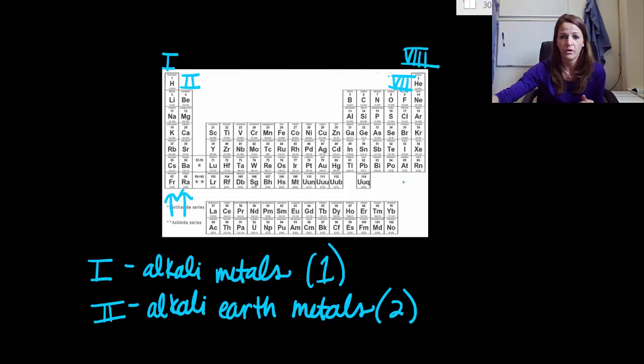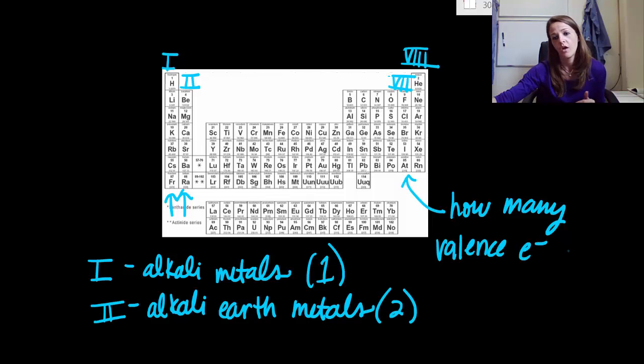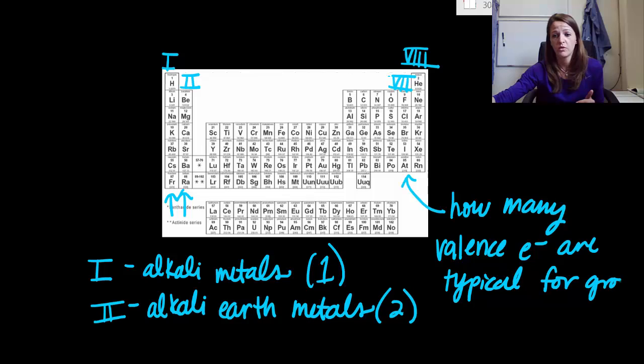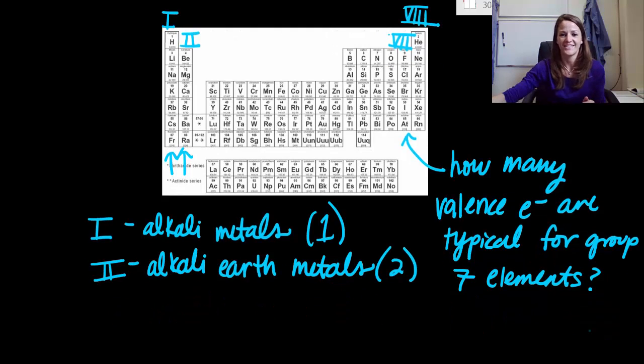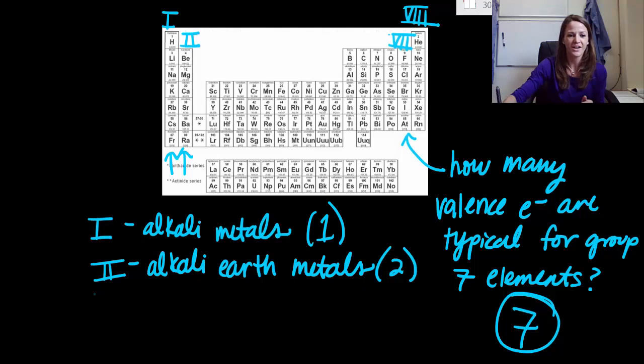So now I'm going to ask you a quick question here before I move on to group seven. How many valence electrons are typical for group seven elements? What do you think? Alright, did you come up with the answer seven? Hopefully you did.